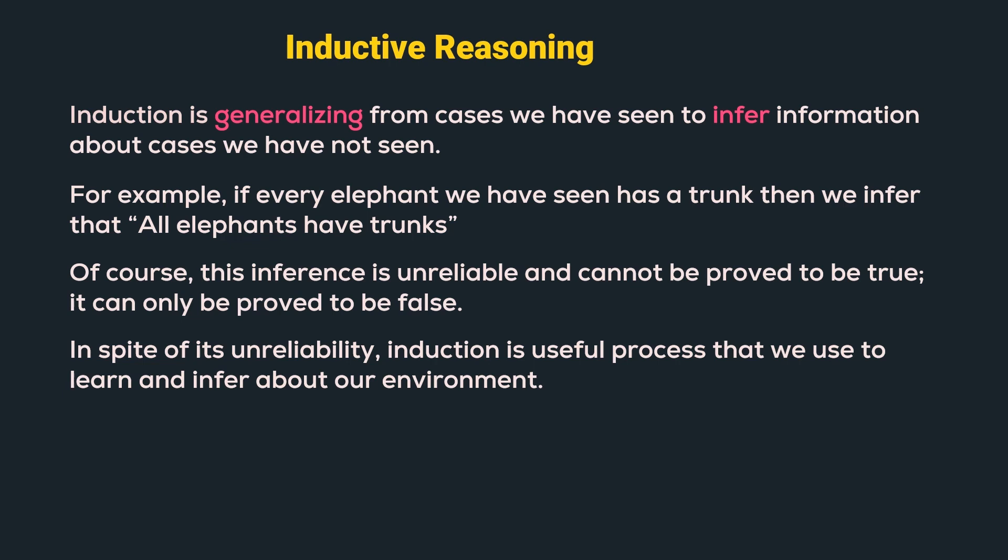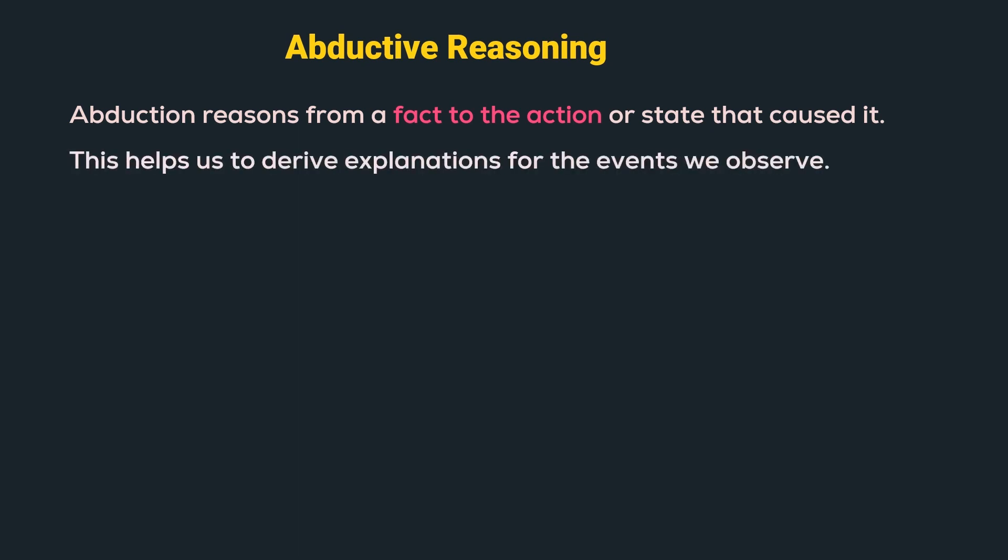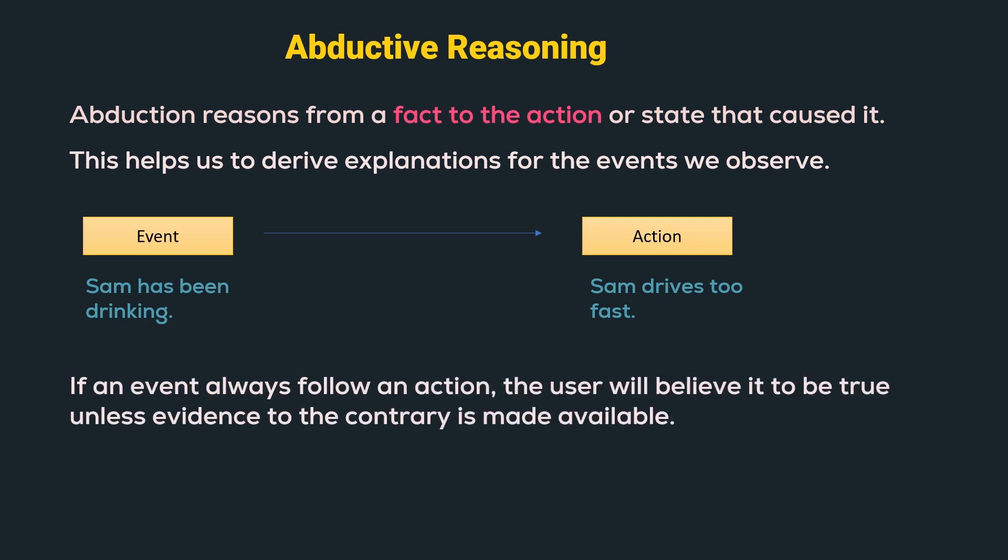Now, let us move on to abductive reasoning. Abduction reasons from a fact to the action or the state that caused it. This helps us to derive explanations for the events that we observe. For example, if we know that if Sam has been drinking, then he drives the car too fast, then we might conclude that whenever Sam drives the car too fast, he is drinking. However, it is not true as there might be other reasons why he is driving fast. Therefore, if an event always follows an action, the user will believe it to be true unless evidence to the contrary is made available.